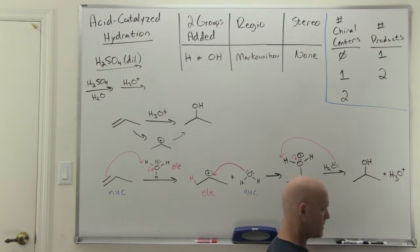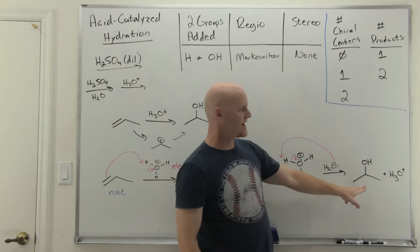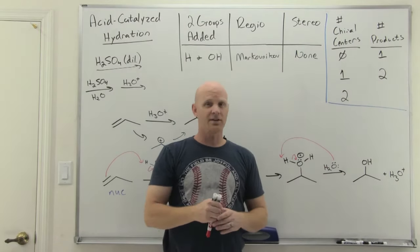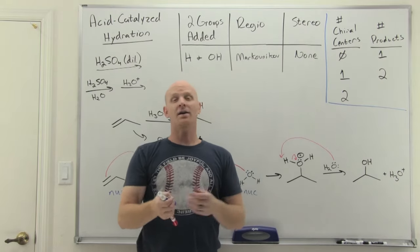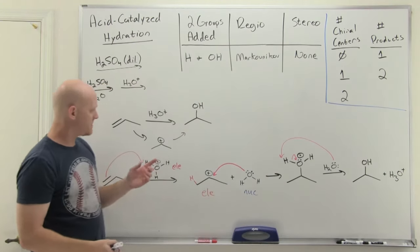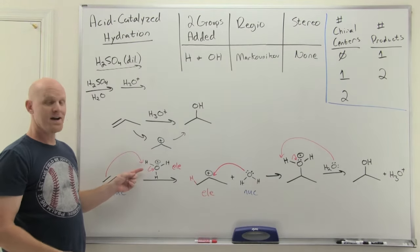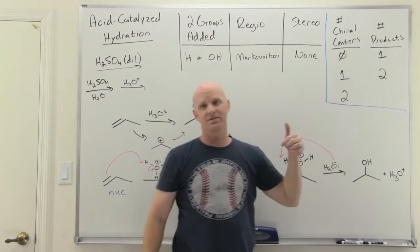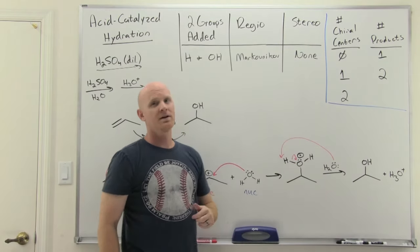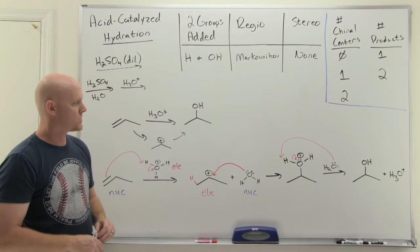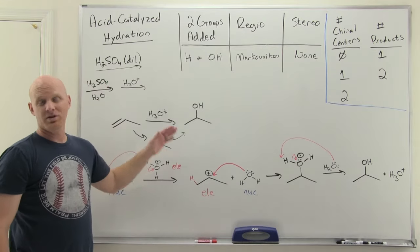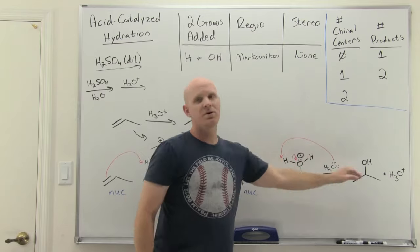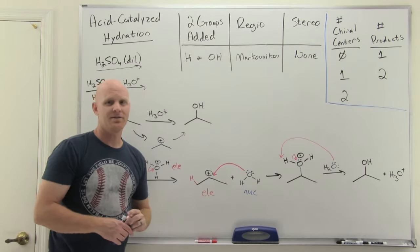That deprotonation forms our product — again achiral — and also regenerates H3O+, the hallmark of a true catalyst: it is not consumed in the reaction. We used a molecule of H3O+ to begin and formed one before the reaction was done. The mechanism looks very similar to HBr, just with one extra proton transfer step at the end.